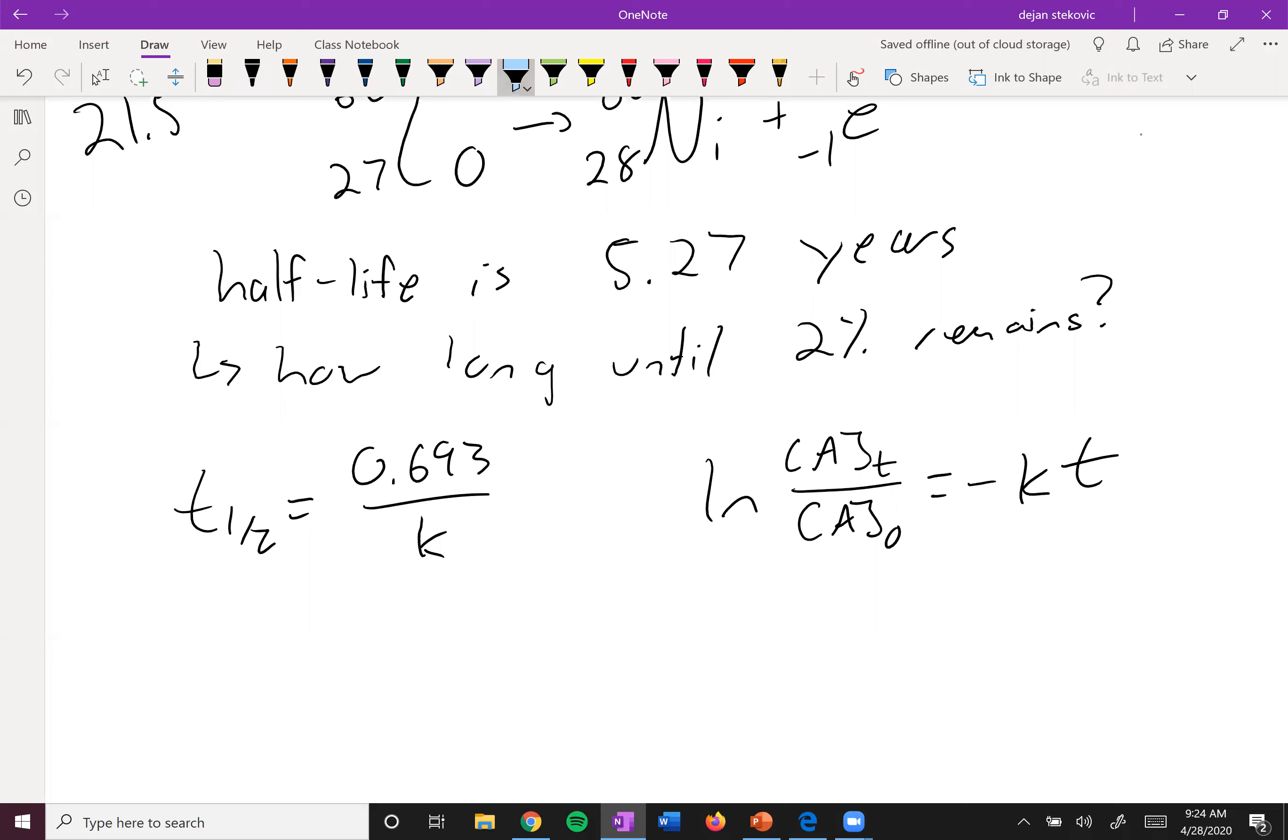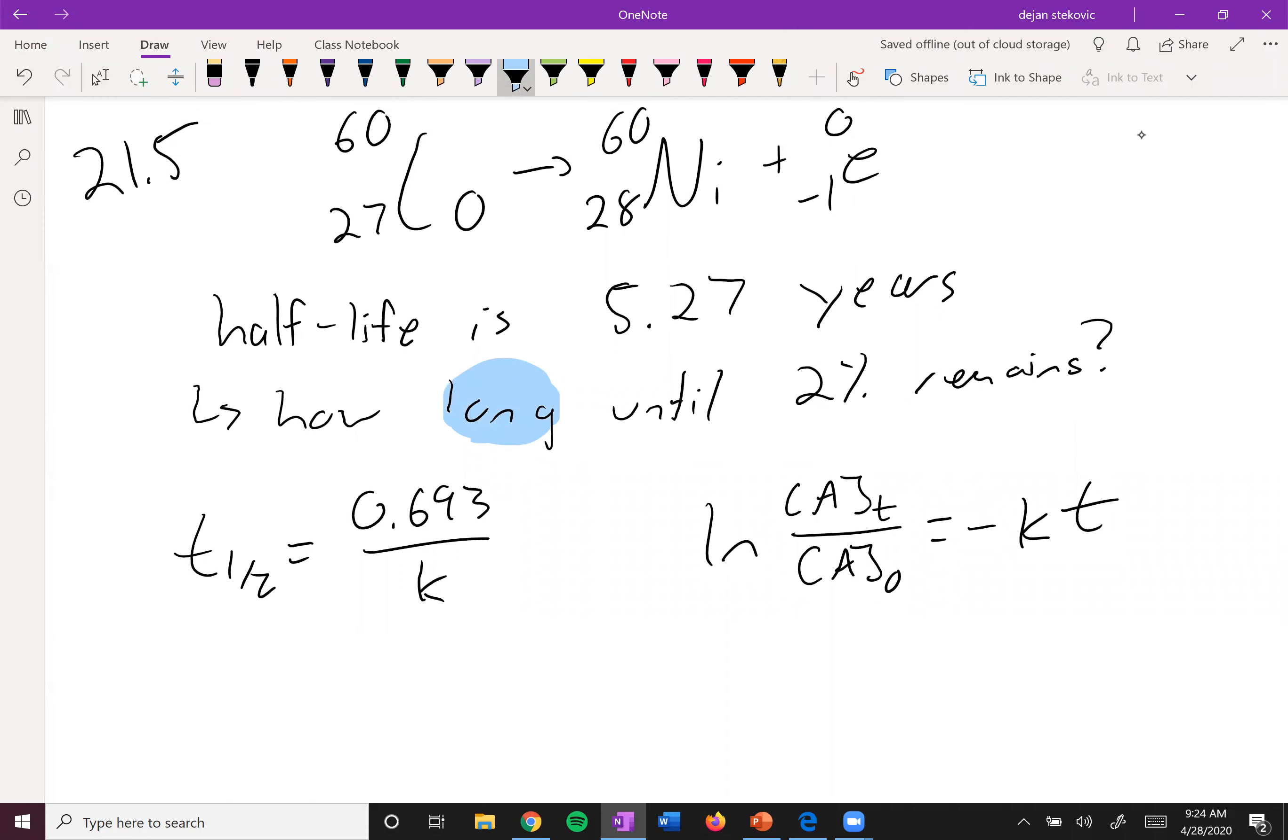If we think about what we want, we want how long—we want a time. That's our want. Let's figure out what other components of this equation we have. We see 2% remains, so that's our concentration at time t.